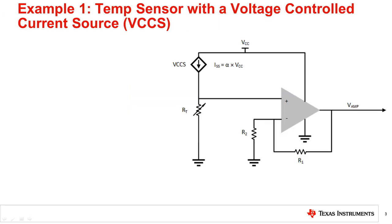To illustrate the concept better, let us consider a case with a thermistor as our temperature sensor. Biased with a voltage-controlled current source (VCCS), the current source is specified as alpha times VCC, where VCC is the supply voltage. The thermistor's output is applied to the non-inverting input of the op amp and can be calculated as the current times the resistance of the thermistor. The gain of the non-inverting amplifier circuit can be calculated as shown.